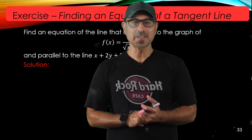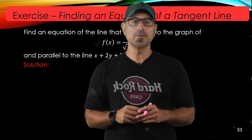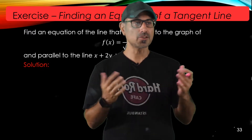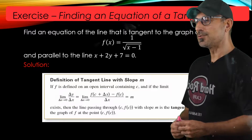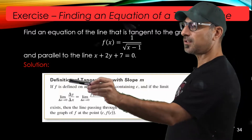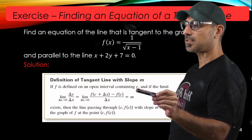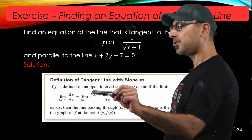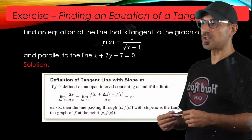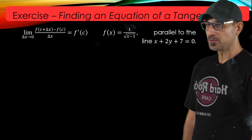Hello, welcome back. In this video we're going to go over an exercise where we're going to use the derivative of a function to define the slope of the tangent line to the curve. We're going to use the limit definition of the derivative. The derivative of function f at point x equals c is the limit definition at point c, and that is the slope of the tangent line to the curve at the point (c, f(c)).